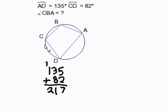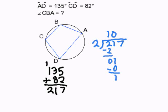So remember though, that is actually double. This is double that of the measurement of this angle. So we need to divide it by 2. And once we do that, we get 108 and a half degrees.